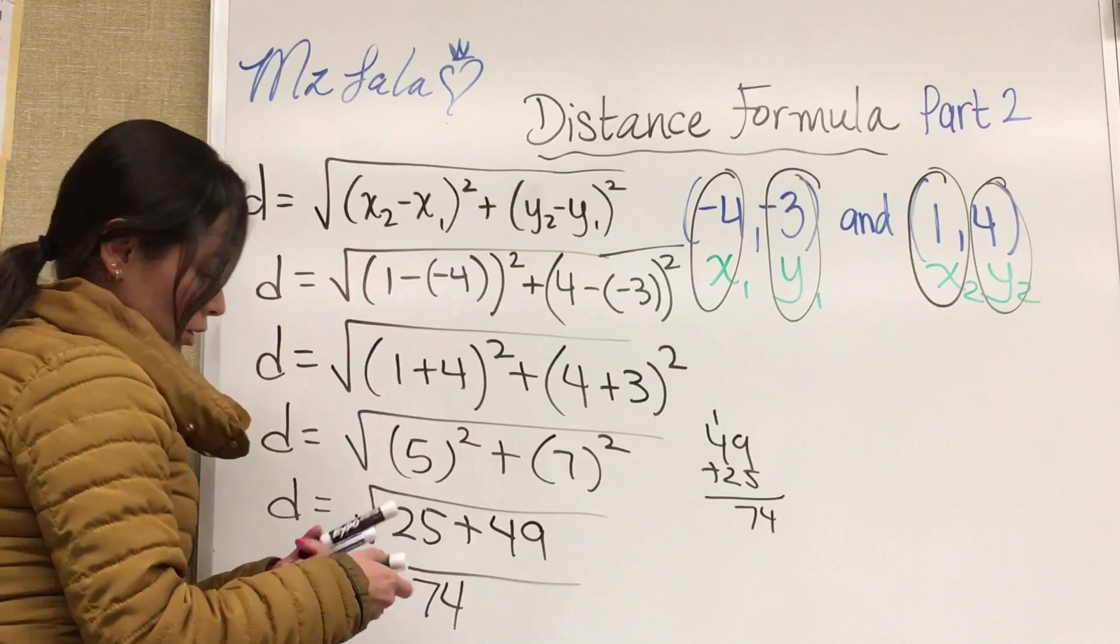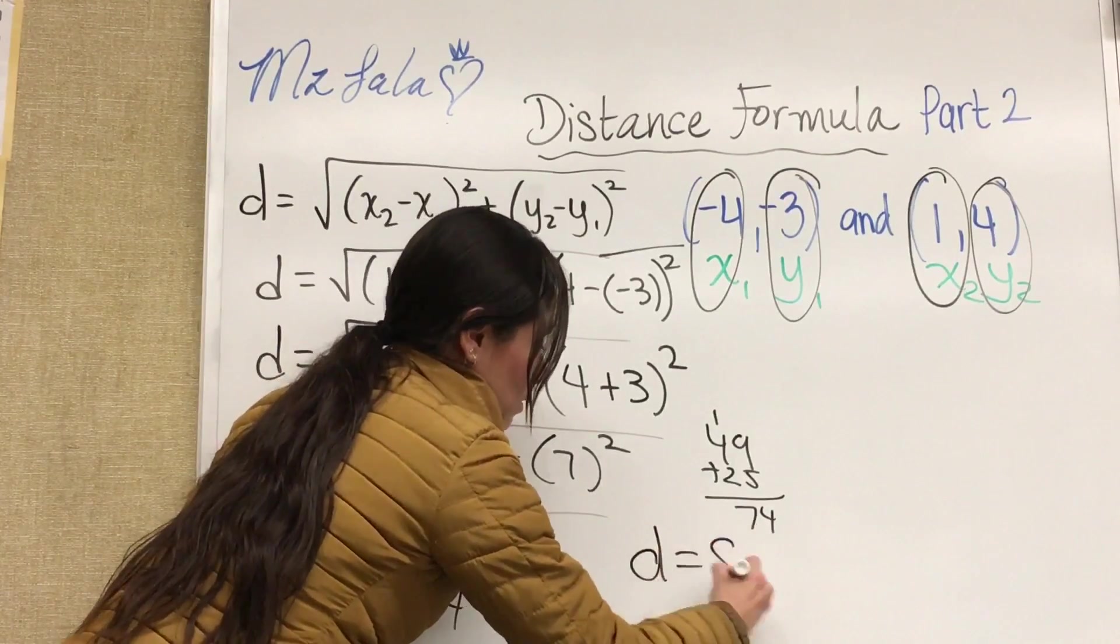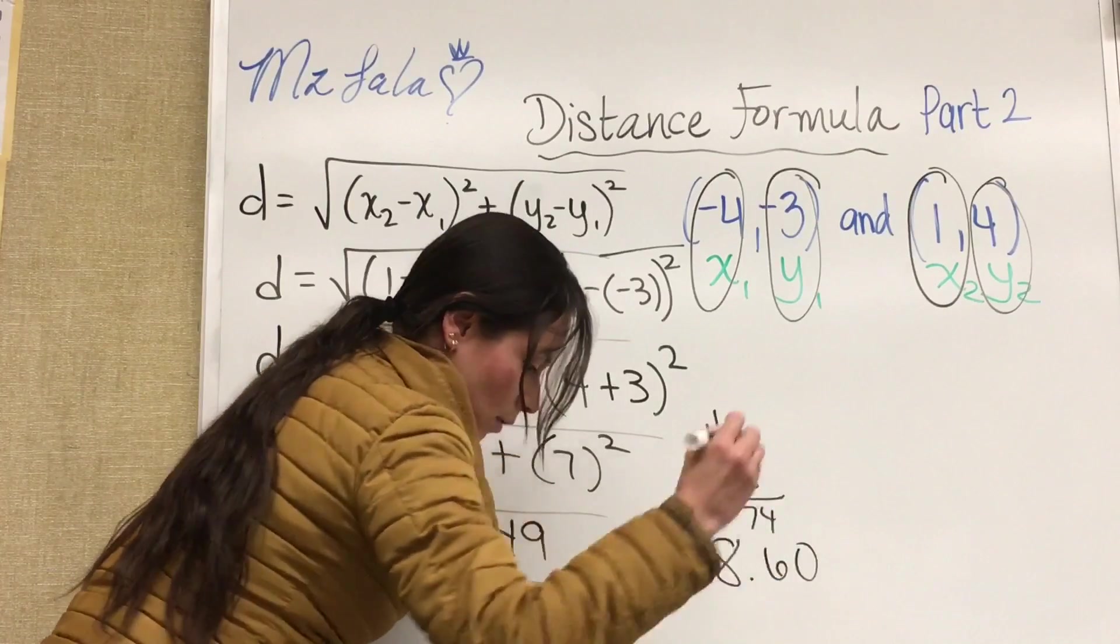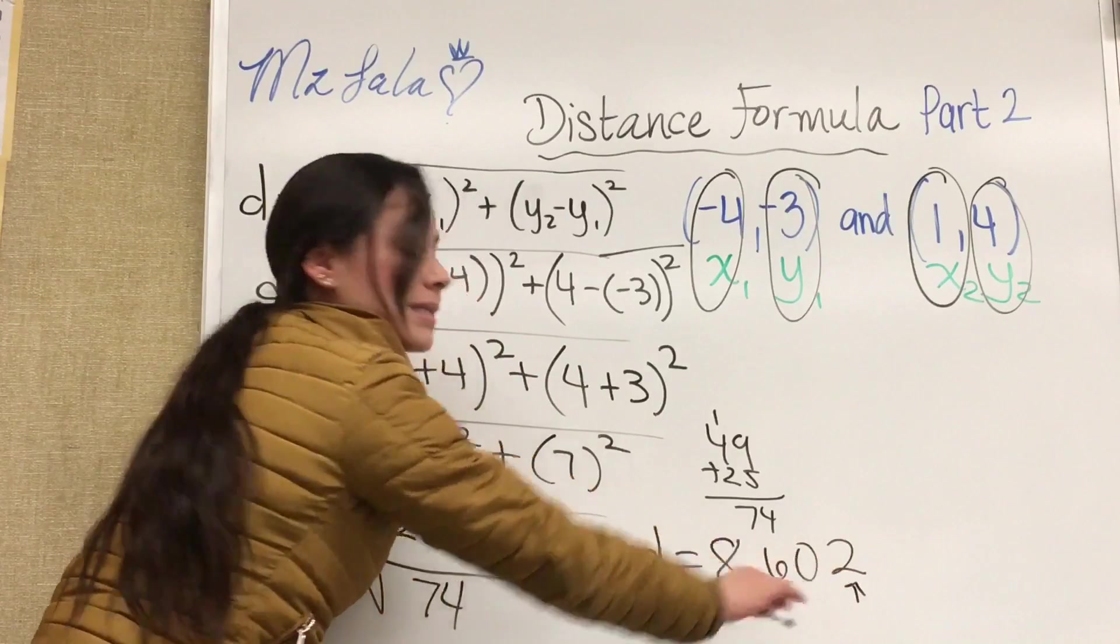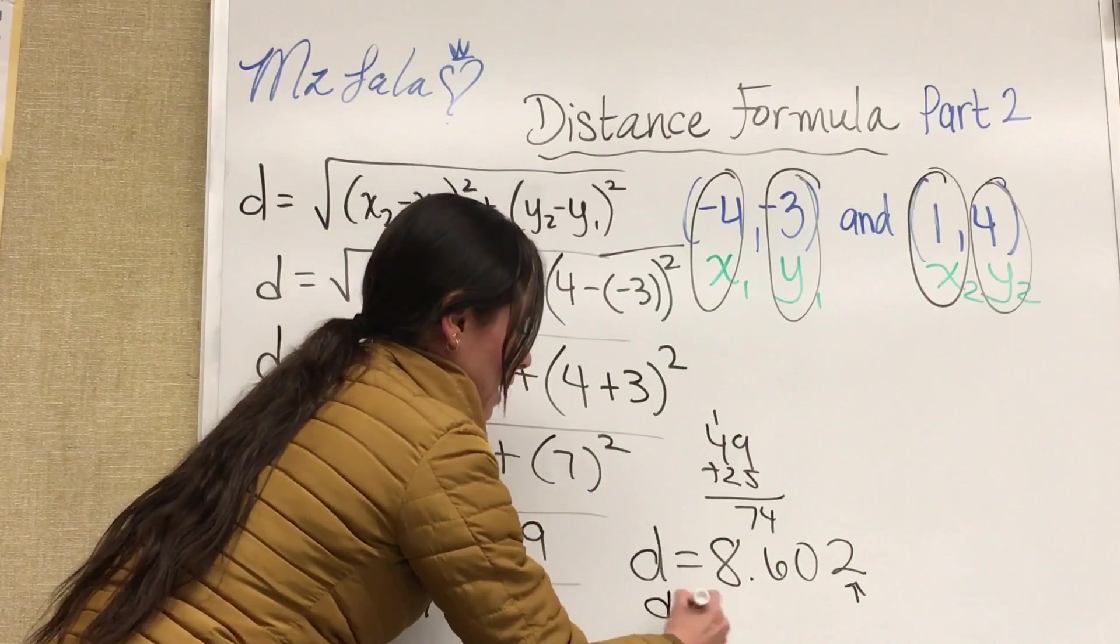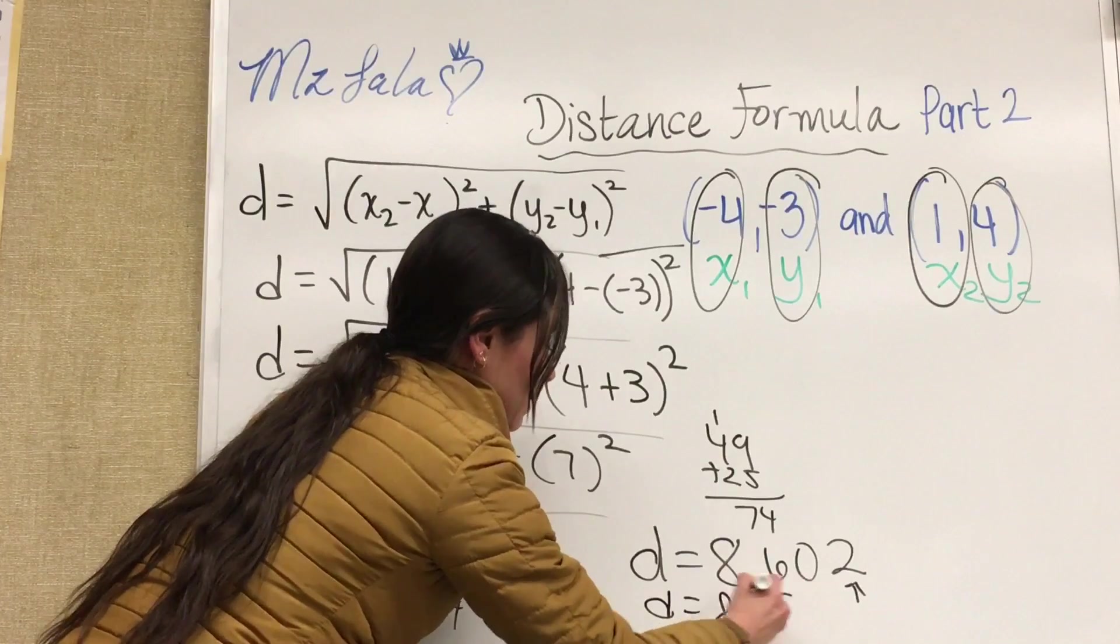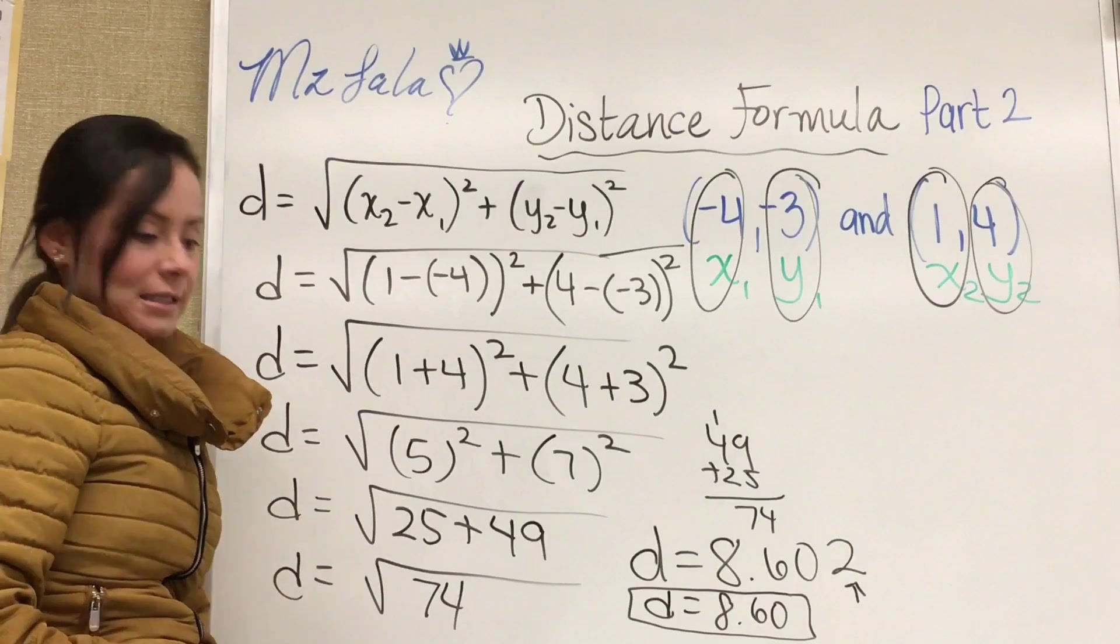Since we got the answer to be d equals 8.602, we look at the thousandths place to be able to round since it's less than 5. This is going to stay as is, so your answer is 8.60. So the distance between those two order pairs is 8.60.